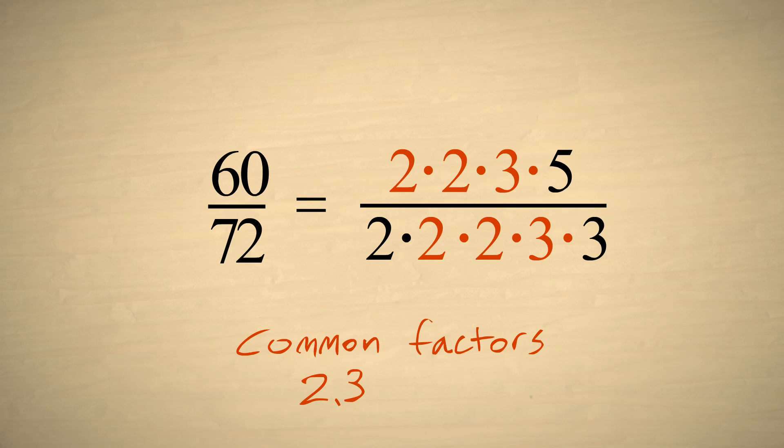But we could also name other factors common to both the numerator and denominator. For example, the composite numbers four, six, and twelve.